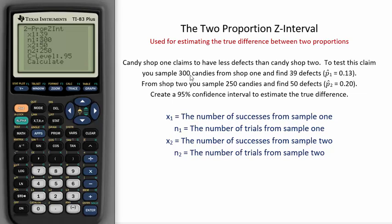Next, from shop 2 you sample 250 candies and find 50 defects. Here, x₂ = 50 is the number of successes in sample 2, and n₂ = 250 is the number of trials in sample 2. This gives a sample proportion of p̂₂ = 0.20. Once again, 20% of 250 is 50 defects. The calculator wants us to enter the number of successes.